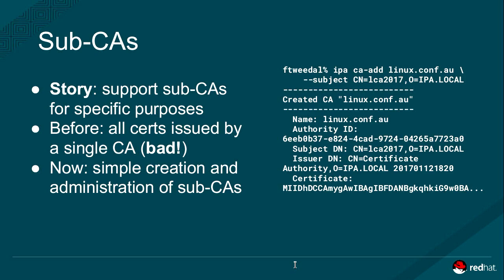So we implemented lightweight sub-CAs, where as an administrator with the required privileges, you can just create a new CA on the fly with a simple command, and then begin issuing certificates from that CA. There are also access control rules defining which CAs and which profiles can be used together for which particular kinds of subjects. For example, you can limit issuance to a sub-CA whose purpose is for issuing VPN client certificates, and you can only use the VPN cert profile together with that CA for users who have membership in the VPN users group.